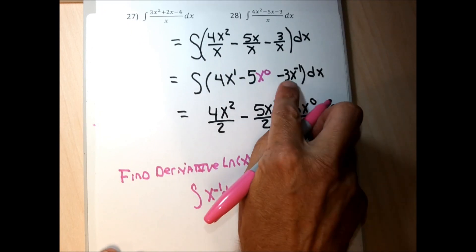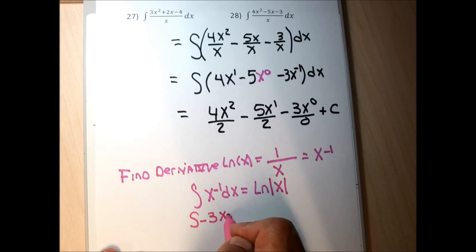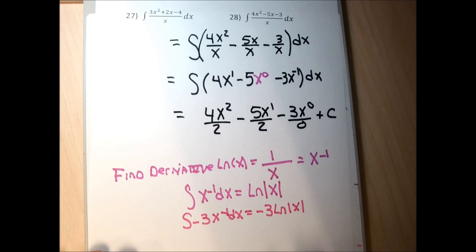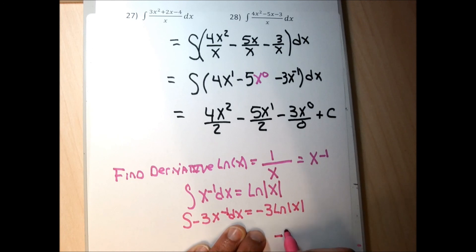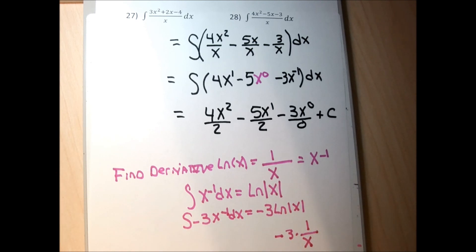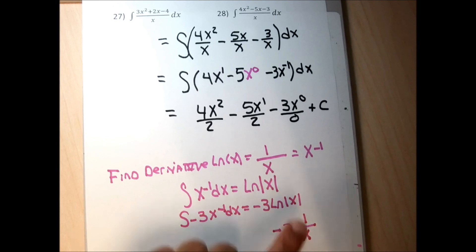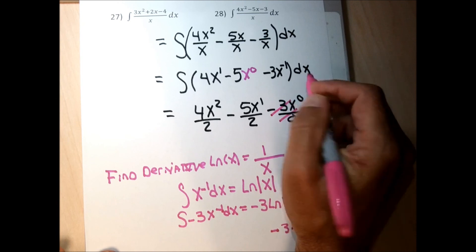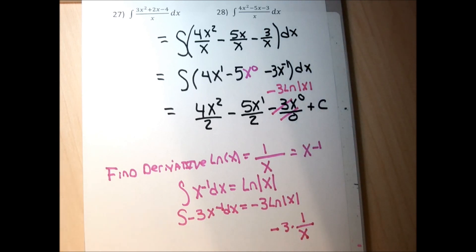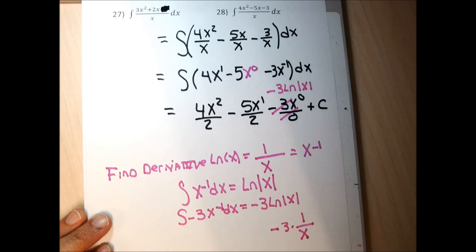For this piece — the integral of negative 3x to the negative 1 dx — the answer is negative 3 times the natural log of x. The derivative of negative 3 ln(x) is negative 3 times 1/x, which is negative 3 over x — matching x to the negative 1. So whenever the exponent is negative 1, the integral of the coefficient times x to the negative 1 is that coefficient times the natural log of x.